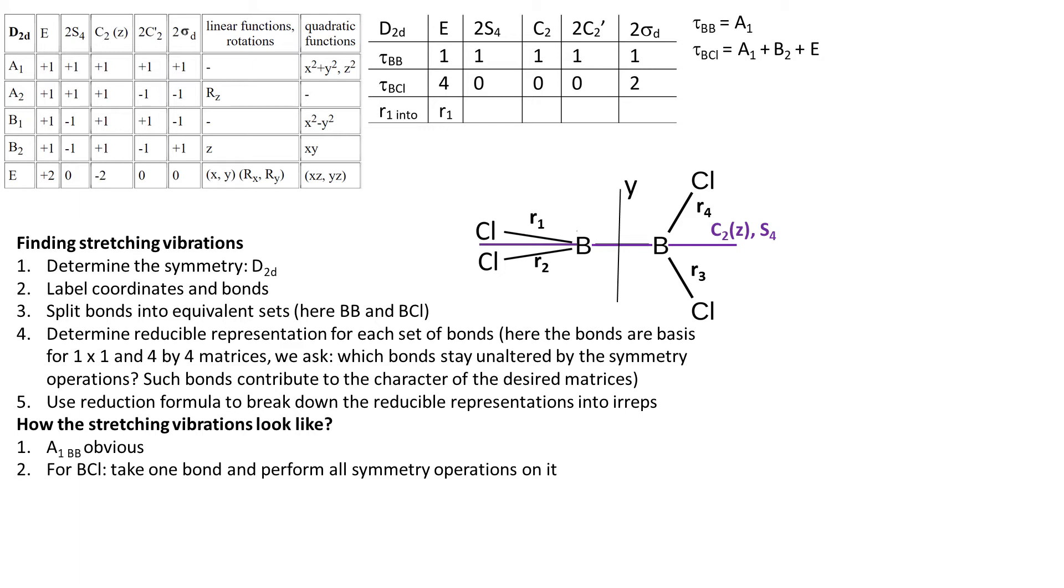So let's think what R1 goes into under S4¹. S4¹ is made up of C4¹ rotation along the Z-axis, followed by reflection in the YX plane. Let's say that the rotation is towards us. R1 stands up and then gets reflected and becomes R4.